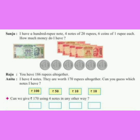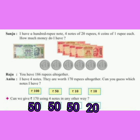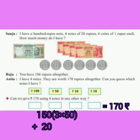Let's see what Anita has to tell us. Anita says: I have 4 notes worth 170 rupees altogether. Can you guess which notes I have? The answer is 100 rupees, 50 rupees, and 2 notes of 10 rupees — that is 4 notes with a value of 170 rupees. Let's also help Anita give 170 rupees using 4 notes in another way: 3 notes of 50 rupees and 1 note of 20 rupees also makes 4 notes with a value of 170 rupees.